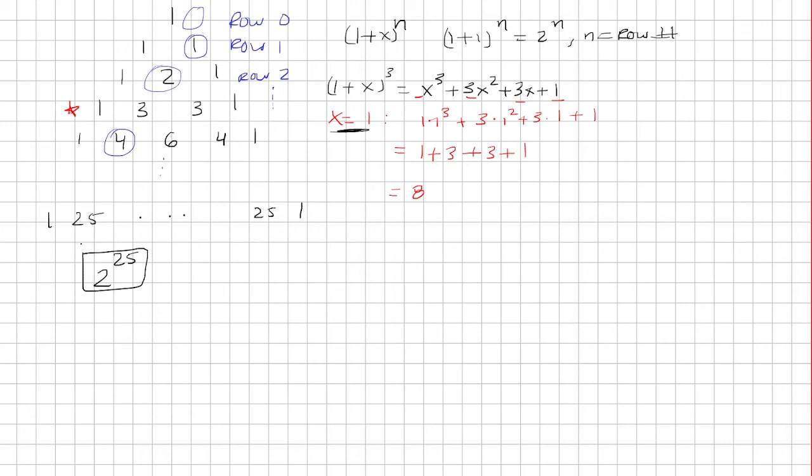Now, the next question is, which row in Pascal's triangle has a sum of its terms equal to 16,384? Well, we know the sum of the terms of each row is going to be 2 raised to the row number. The sum is 16,384, so that's going to equal to 2 raised to the row number.